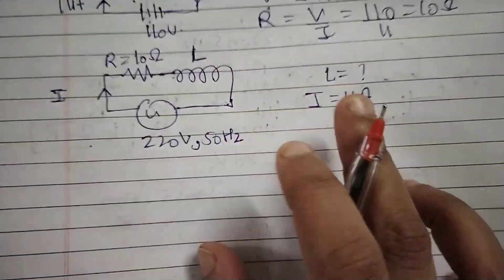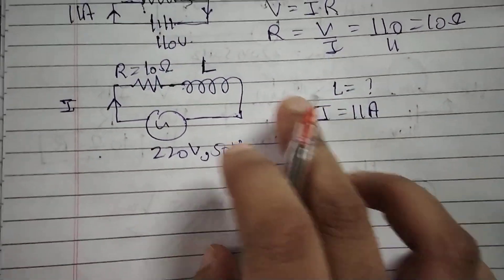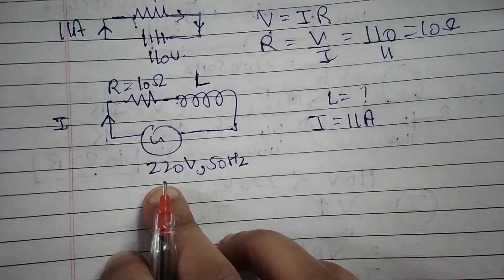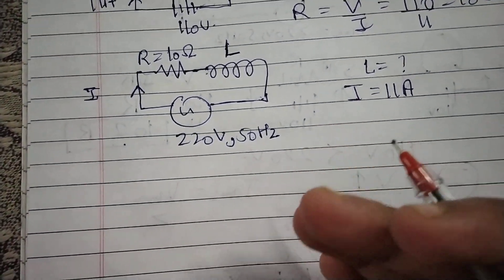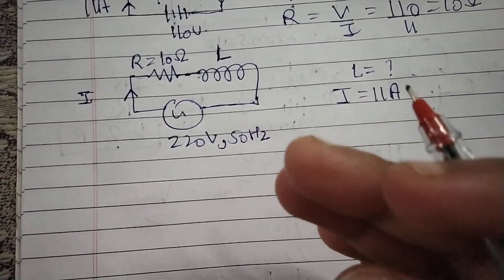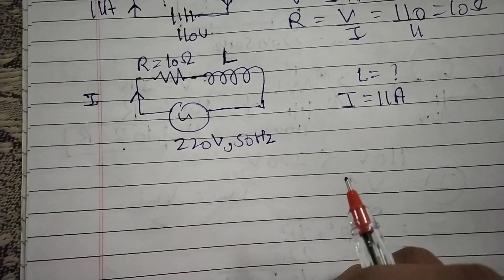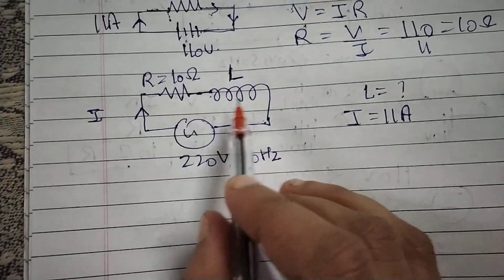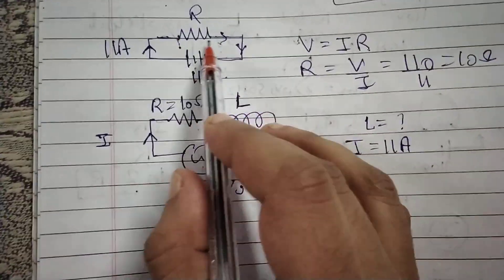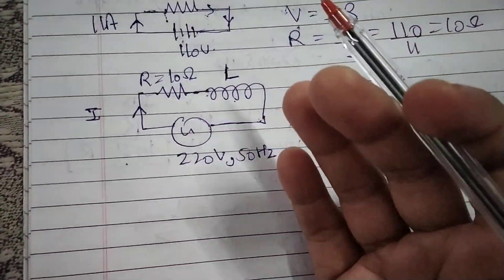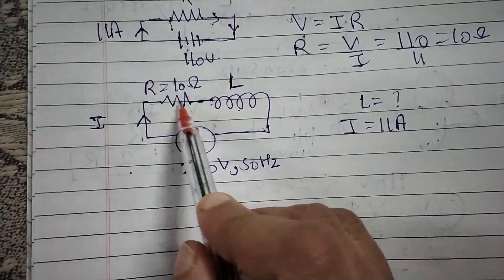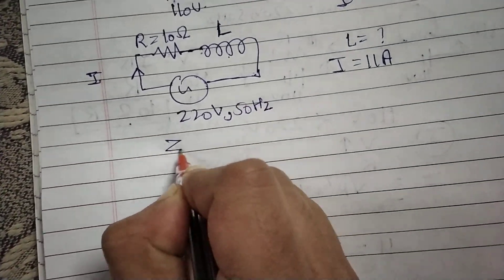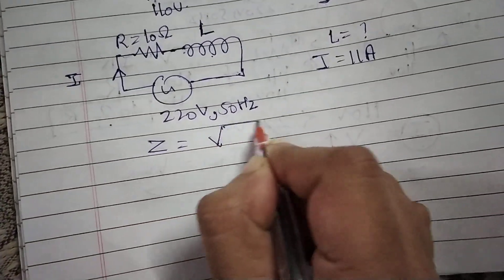This is a 110 volt bulb but we are applying 220 volts — more voltage than needed. So we place an inductor in series. This way we are providing both resistance R and inductance L to the circuit, giving us impedance. The impedance will be increased.